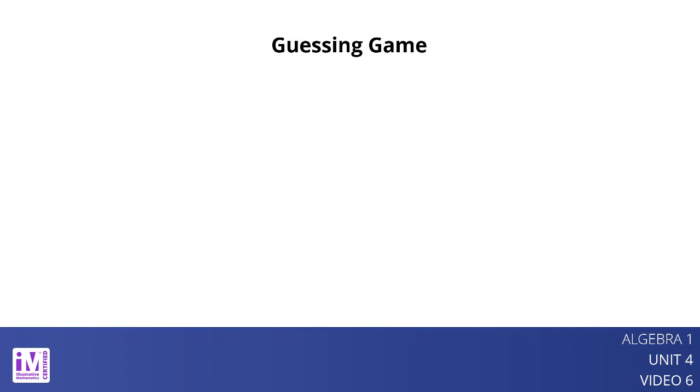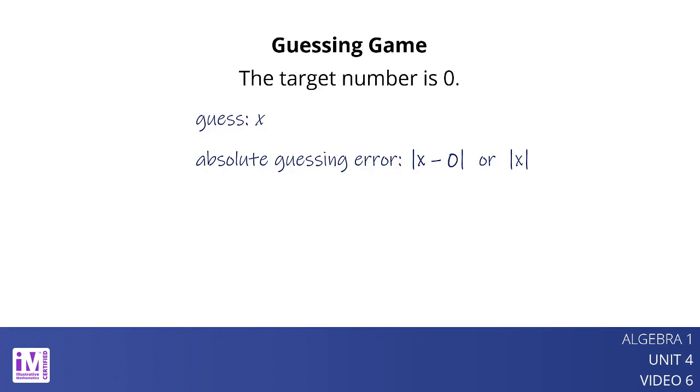Let's look at a guessing game where the target number is 0. For a guess x, we can find the absolute guessing error, or distance from 0, by first calculating x minus 0. Because distance cannot be negative, what we want to find is the absolute value of the quantity x minus 0, or simply the absolute value of x.